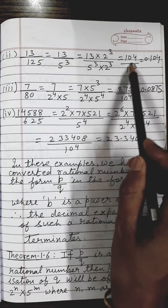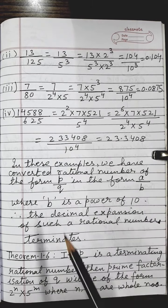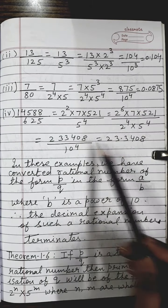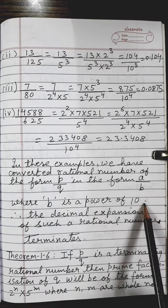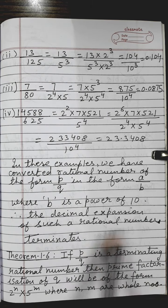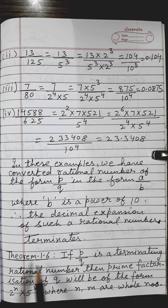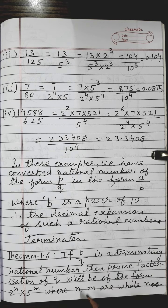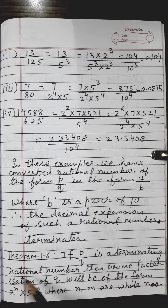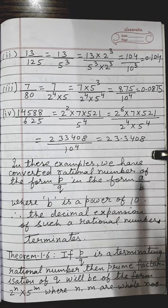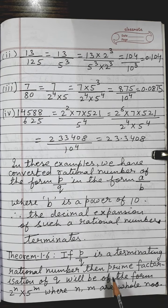In all these examples, B is the power of 10. The decimal expansion of such rational numbers terminates — meaning when we divide them, the remainder comes out to be 0. These were the examples. Now based on these examples there is a theorem — theorem 1.6 in your book. The statement says: if P upon Q is a terminating rational number, then the prime factorization of Q will be of the form 2 to the power n into 5 to the power m, where n and m are whole numbers.